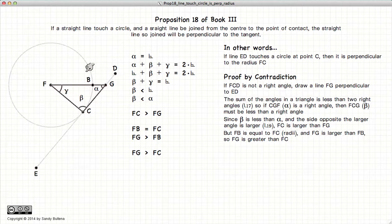But let's look at this line FG. FG is larger than FB. Sort of goes without saying. But FB is equal to FC. So in other words, FG is larger than FC.